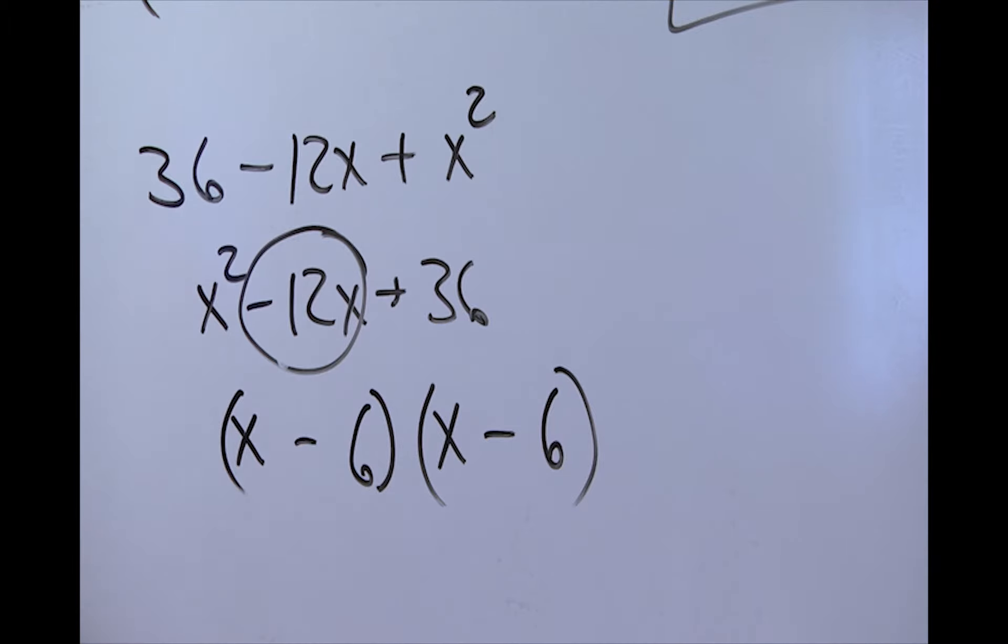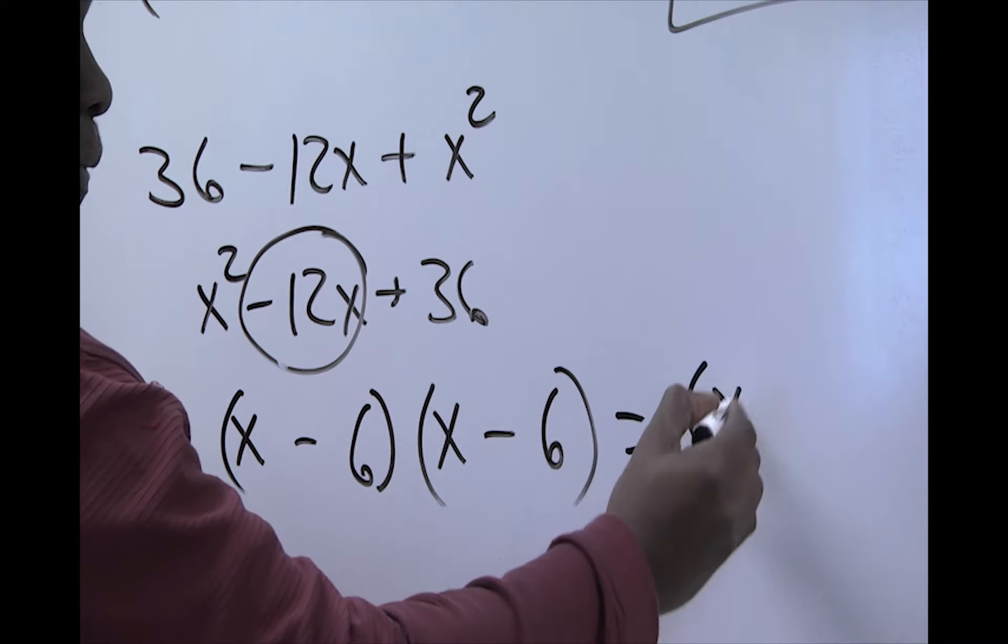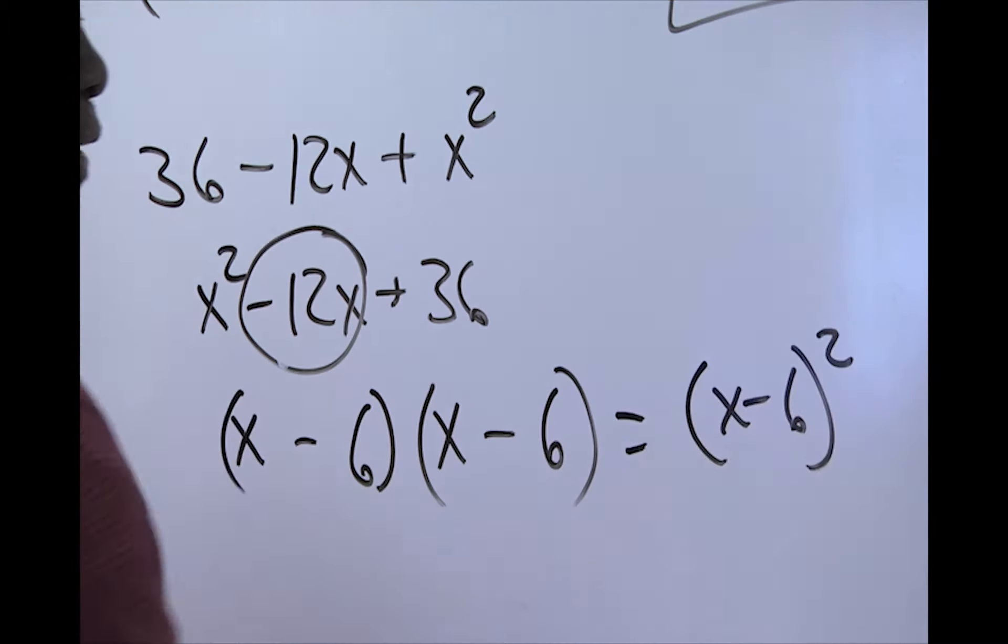Now, both of these are the same as well. So, that means that we are going to write this thing as (x - 6)² raised to the second power. So, this will be our factorization using special product.